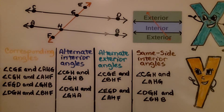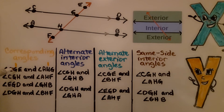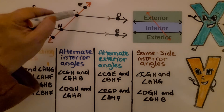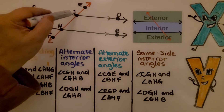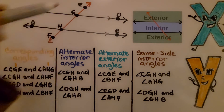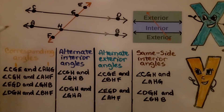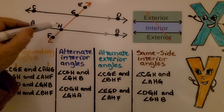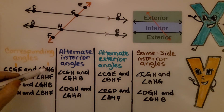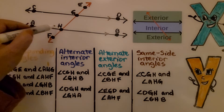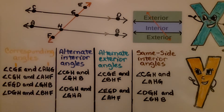When angles are labeled with letters, whatever the middle letter is, that is the vertex. For example, in angle CGE, G is in the middle, so G is the vertex of that angle. For angle AHG, H is the center letter and is the vertex.